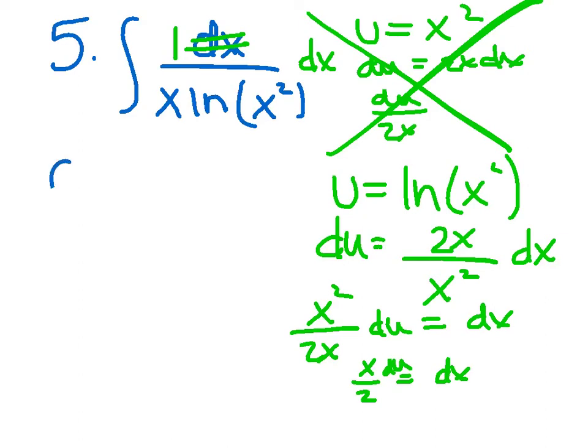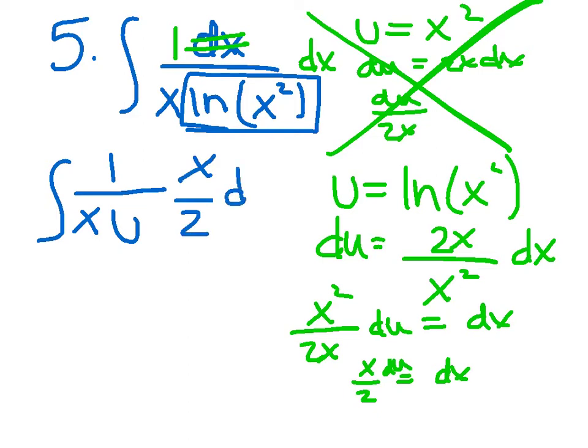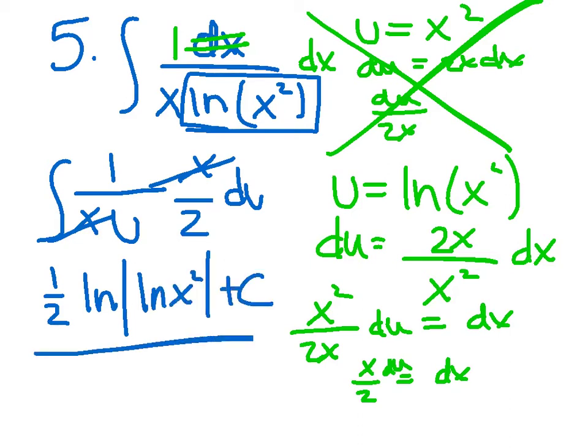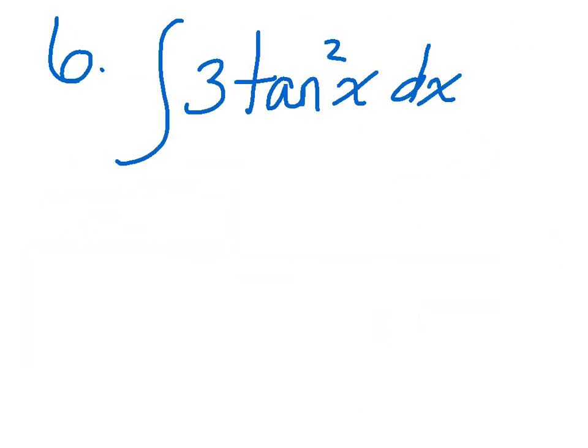I'm going to go ahead and substitute that in. So, I've got 1 over x. Remember, this whole ln of x squared was my u. And then, I've got x over 2 du. So, my x's will cancel. I can pull out a 1 half. I've got the integral of du over u, which of course is ln of the ln of x squared plus c. So, again, if you're stuck on any of these, take your time, pause it, and rewind it. The learning's in your hands.